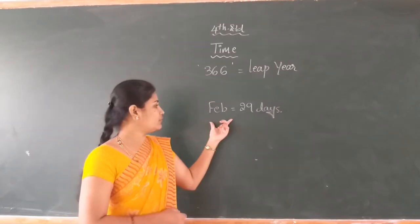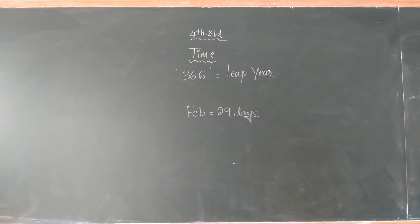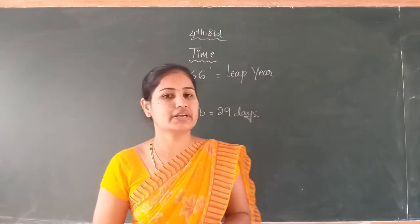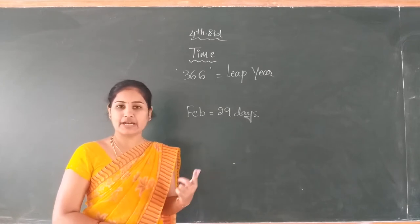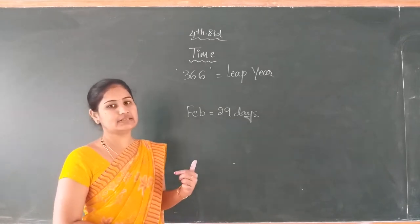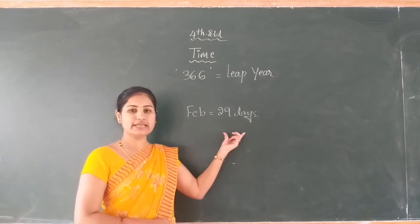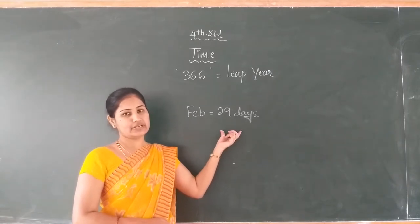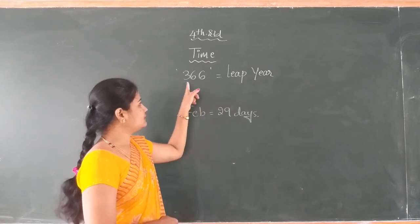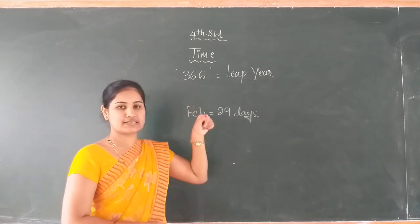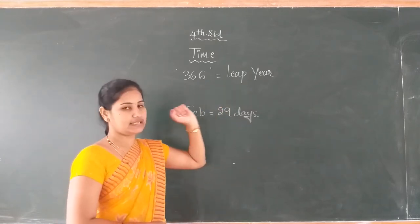Because 1 day is added every 4 years once, the February has 29 days. Every 4 years once we can add 1 day to that year. Therefore, February has 29 days, and 366 days are present in that year. We call it as a leap year.